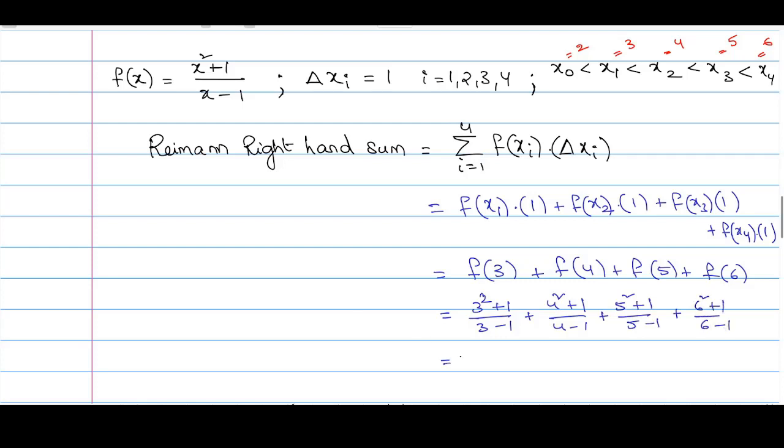Further simplifying, we get 3 squared plus 1 is 10 by 3 minus 1 is 2, plus 4 squared plus 1 is 17 by 4 minus 1 is 3. This will be equal to 5. 10 by 2 is 5, 17 by 3 is approximately 5.67, 26 by 4 equals 6.5, and 37 by 5 equals 7.4. We add all this, we get 24.57.